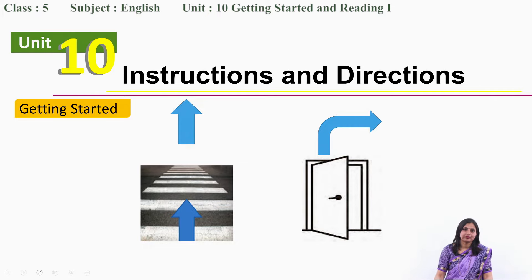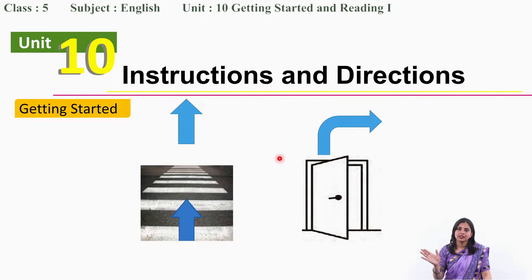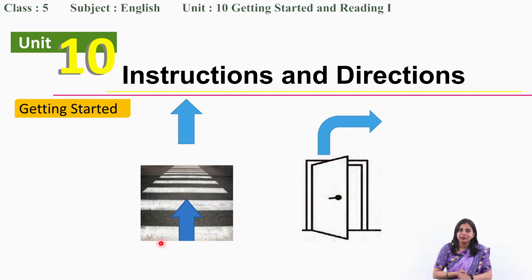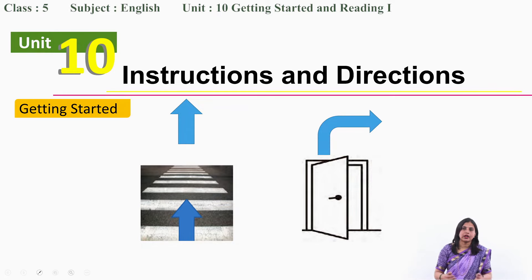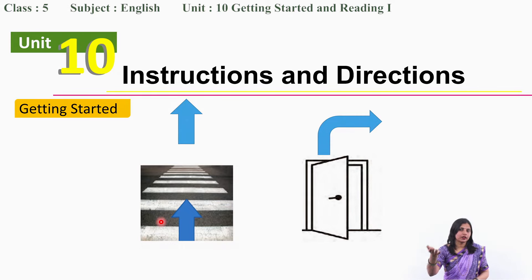What about this sign? Very good — it means turn right. You see the arrow is turned in the right direction, so it means turn right. What about this picture? Which part of the road is this? Very good — yes, it is a zebra crossing. Do you cross the road using the zebra crossing? You must use the zebra crossing. You should not cross the road from anywhere you like.